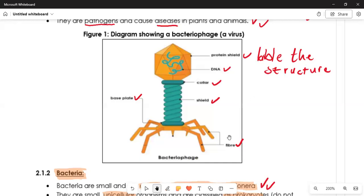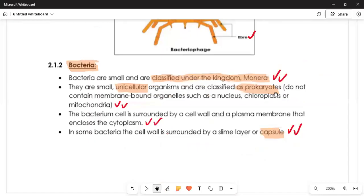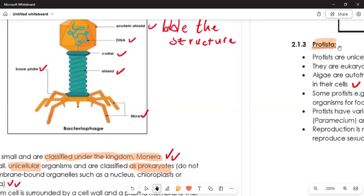Let us move to bacteria. Bacteria are small and are classified under the kingdom. They are unicellular organisms and are classified as prokaryotes. They do not contain membrane-bounded organelles such as the nucleus, the chloroplast, or the mitochondria. The bacterium cell is surrounded by the cell wall and the plasma membrane that encloses the cytoplasm. The cytoplasm at all times should be surrounded by moisture or fluid so that there can be life in a cell. The cell wall is the protection. In each bacteria cell wall it is surrounded by the slime layer or the capsule.